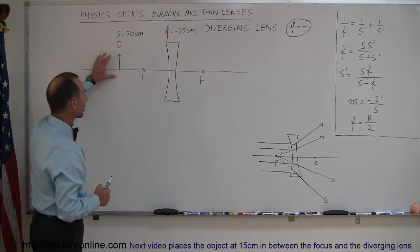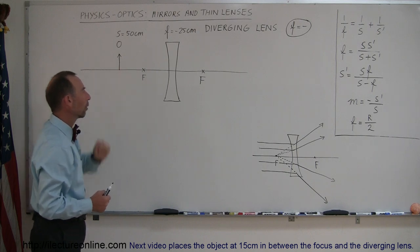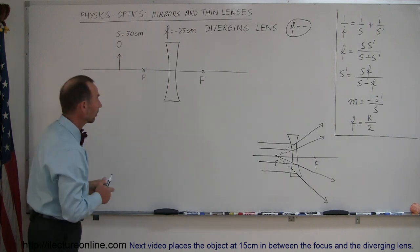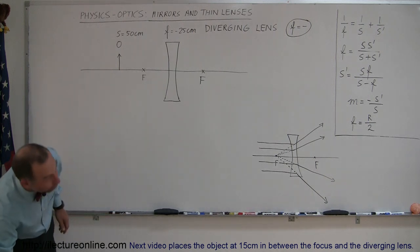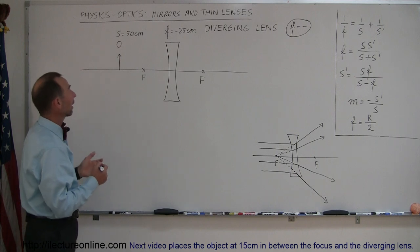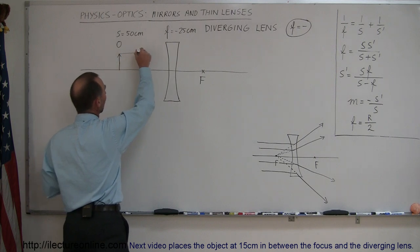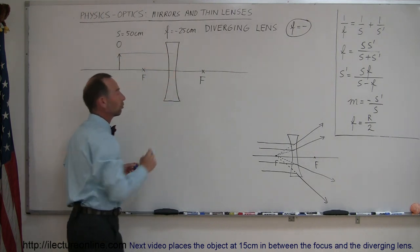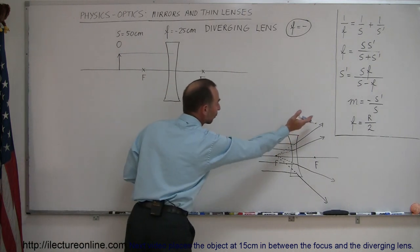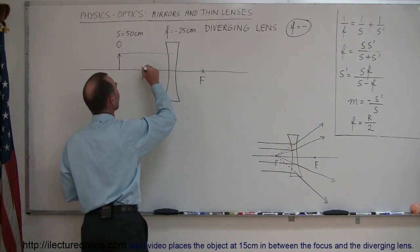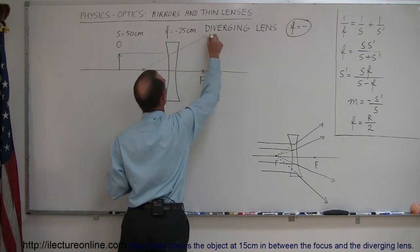If we now place an object in front of that lens, for the first example I put the object beyond the focal point of the lens in front of the lens. Where will the image appear? Again we're going to use our techniques to figure out where the image will be. We draw our first ray from the top of the object parallel to the normal, and then the ray will diverge as if it came from the focal point in front of the lens here. So this is ray number one.